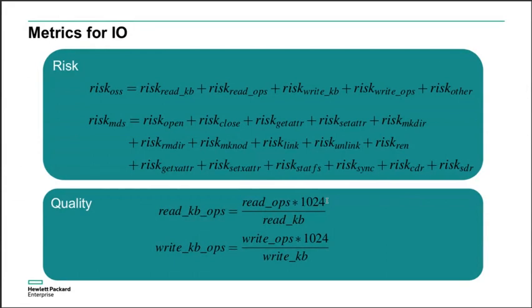We also define a metric for quality of the reads and write operations. On a Lustre file system, if you do one MB of read or write per operation, that means you're doing an optimal read or write. But people sometimes do one byte per operation, which is very suboptimal. We use this quality metric to denote the quality of reads and writes — higher values are bad, anything close to one or zero is very good. A lower value means you are not causing risk and your quality is very good; a bigger value means you are causing risk of slowdown or your quality is bad.